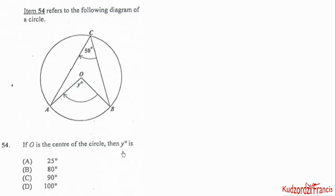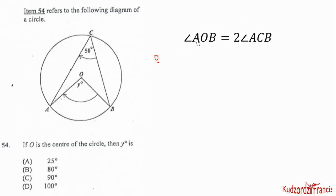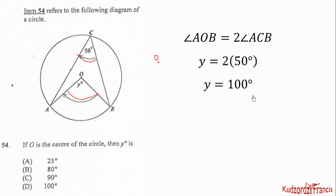Item 54 refers to the following diagram of a circle. If O is the center of the circle, then y equals what? By circle theorems, the angle at the center is always twice the angle at the circumference. So angle AOB equals two times angle ACB. We know y is angle AOB and 50 degrees is angle ACB. Substituting, y equals 2 times 50 degrees, giving y equals 100 degrees. The correct option is D.